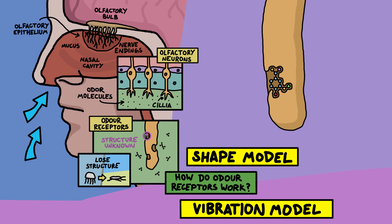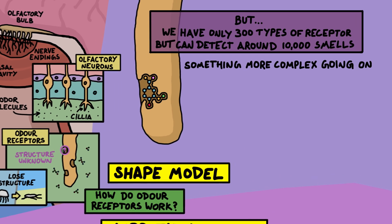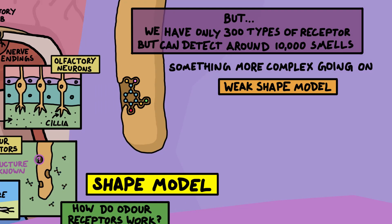However, this theory doesn't quite work because we know that we don't have one kind of receptor for every type of odor molecule. We have about 300 different kinds of receptors, but we can detect about 10,000 different smells. So there's something more complicated going on. The latest theory is that each receptor is built to fit just one section of a molecule. So any molecule that has that part will have a similar smell. So any molecule that has a sulfur-hydrogen bond will smell like rotten eggs.